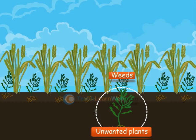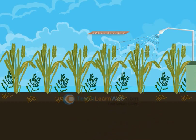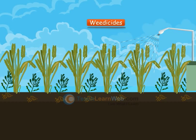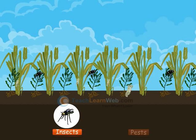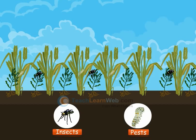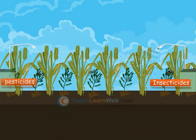Weeds are the unwanted plants in the cultivated field. Weed control methods like mechanical removal or addition of weedicides are used to control the growth of weeds. Insects and pests cause many diseases in plants and should be controlled by insecticides and pesticides.